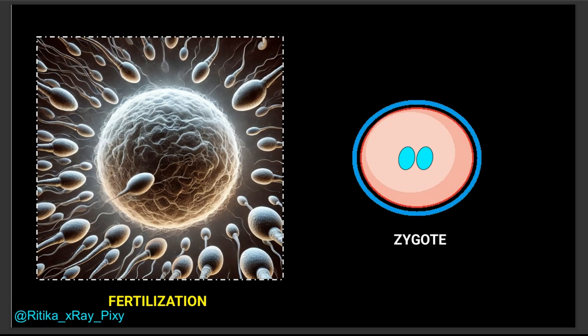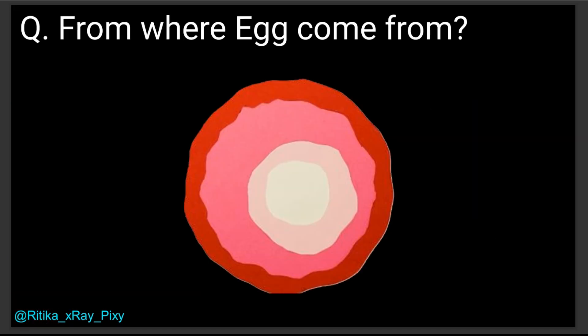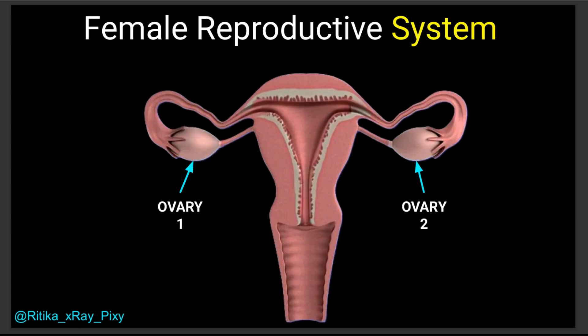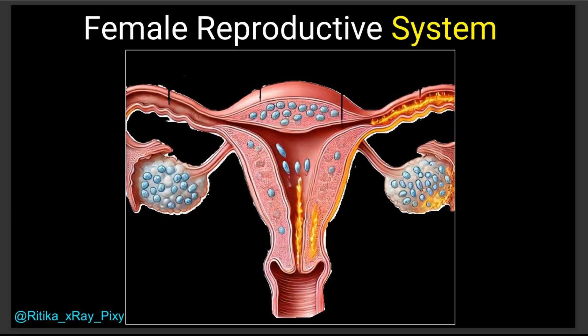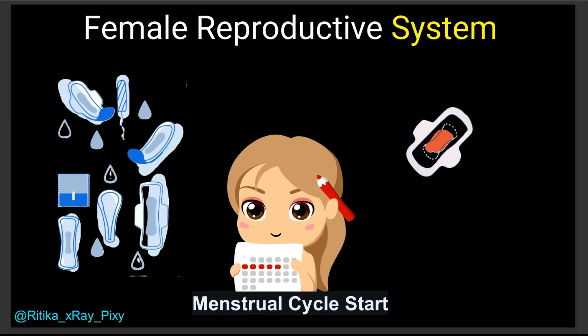New life begins as a tiny zygote which grows and develops over time. Females have two ovaries, but only one egg is released each month during ovulation — and it's not always the same ovary. That egg travels down the fallopian tube where it may meet the sperm if sexual intercourse happens. Females are born with all the eggs they will ever have.